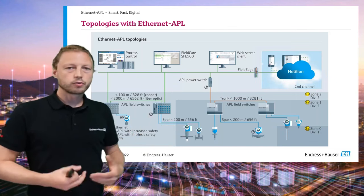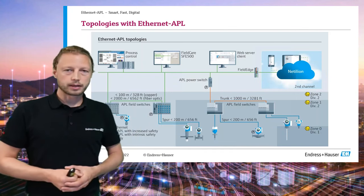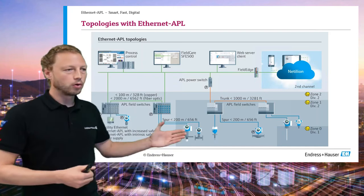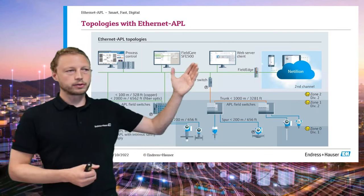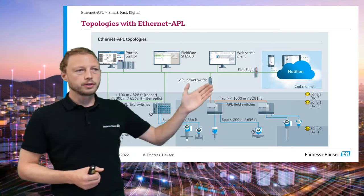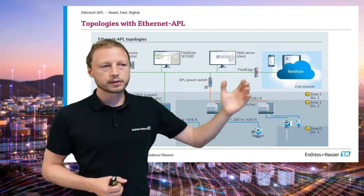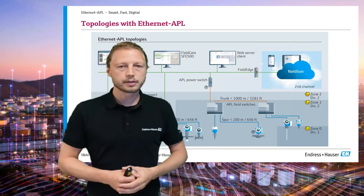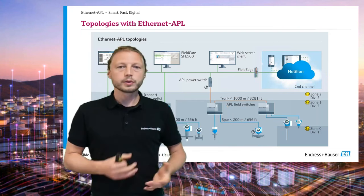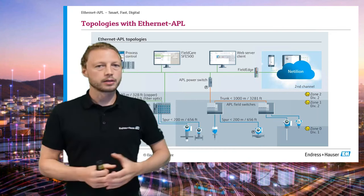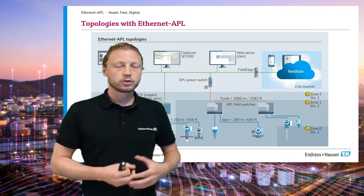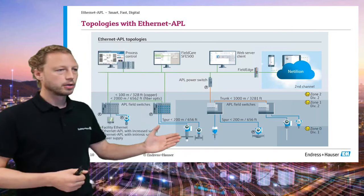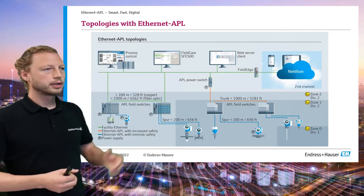This is a point-to-point connection running at 10 Mbit/s. That speed is fast enough to simultaneously open a web server of the instrument, communicate via an edge device to a cloud application — for example Netilion, Endress+Hauser's IoT cloud — to start collecting big data from the process, while also sending process values directly to the automation system.